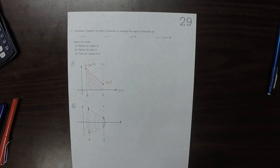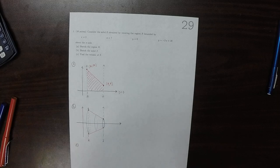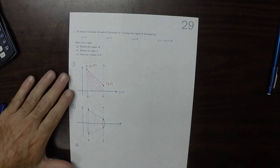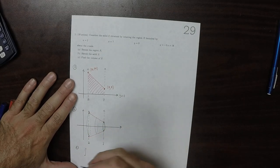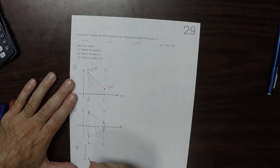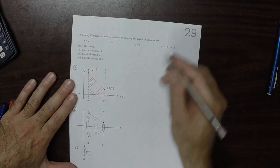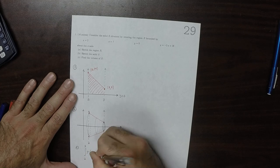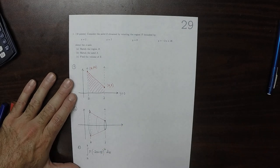And then part C is we want to find the volume. Well, in this case, the formula will be an integration from 2 to 7, and then pi times the radius squared. Well, the radius is negative 2x plus 18 squared dx. Okay, so that's the formula.